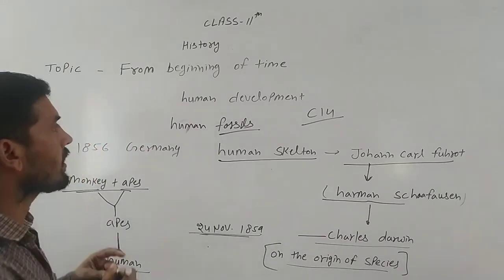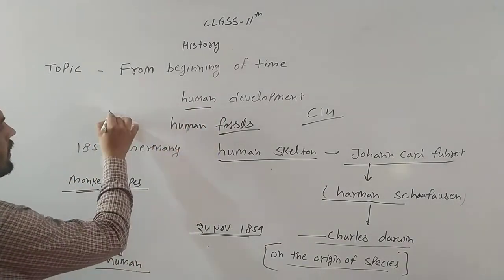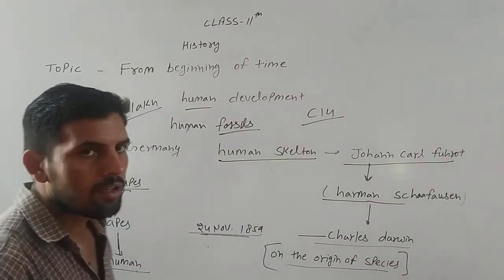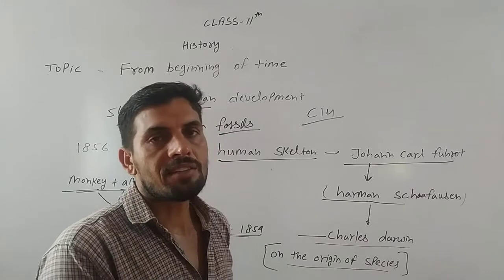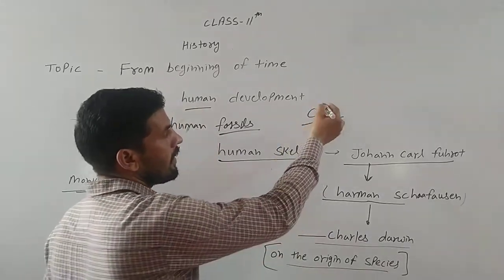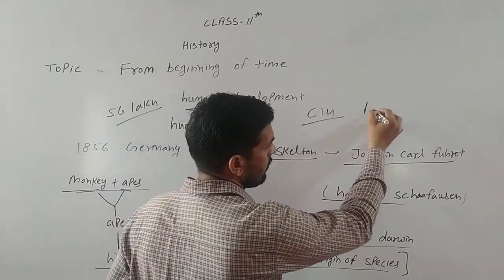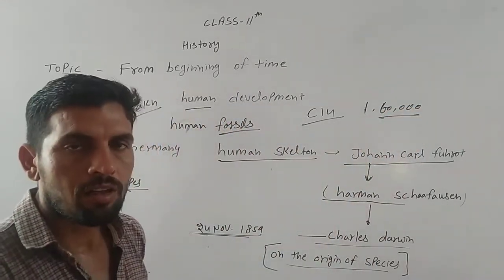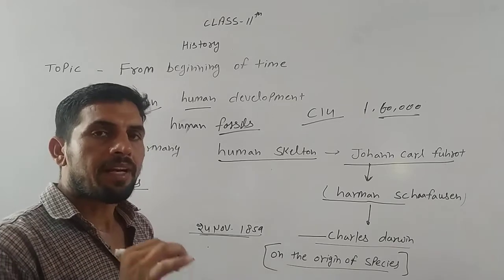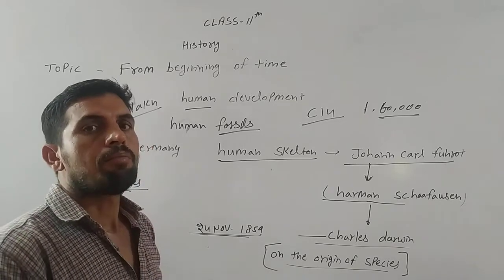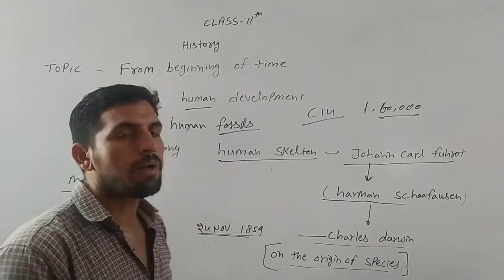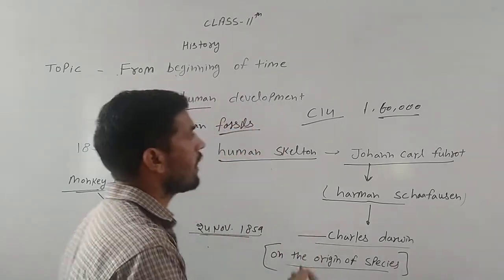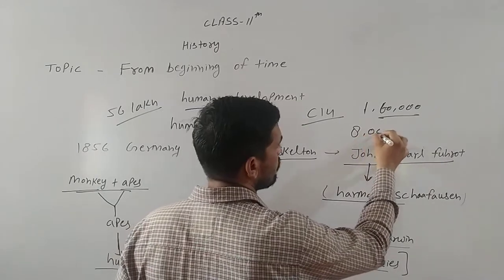Let's talk about human development. Humans existed about 56,000,000 years ago, and the physical appearance of modern humans emerged about 1,60,000,000 years ago. The human species was established about 8,000,000 years ago.